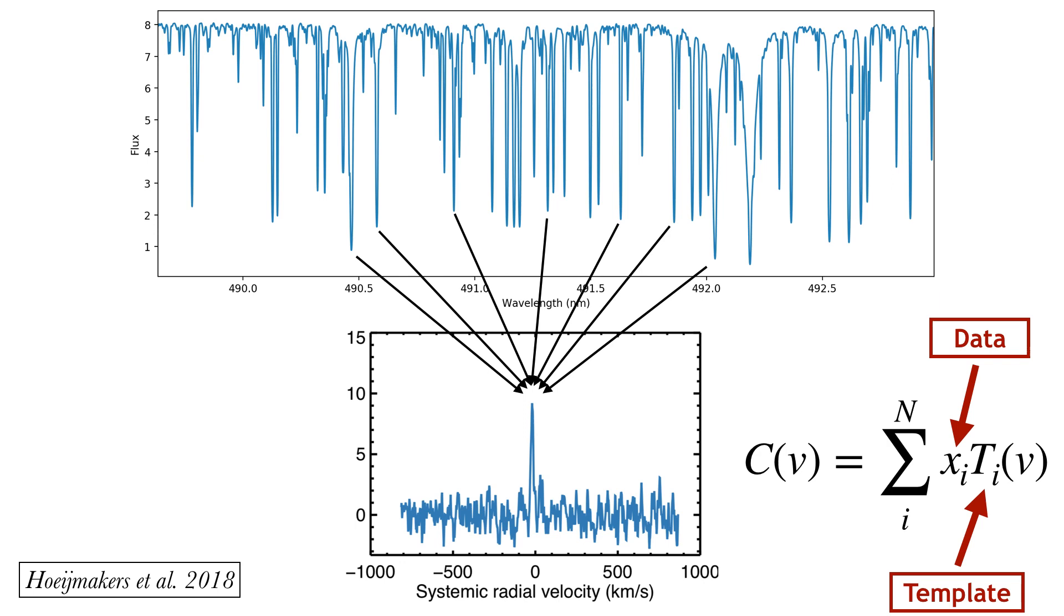There are similar mathematical implementations in use in the literature, but in one way or another they all rely on averaging many spectral lines to effectively reduce the noise in the measurement.